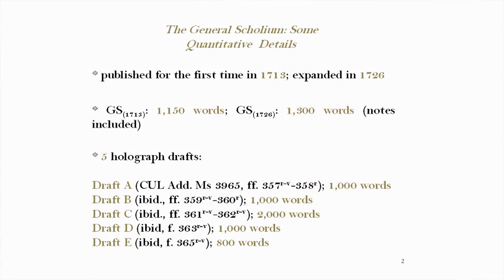I was asked to give some details regarding the General Scholium. We all know that the General Scholium was published for the first time in 1713, that is, in the second edition of the Principia, and that it was expanded in the third edition. We have five holograph drafts of the General Scholium, drafts A to E.